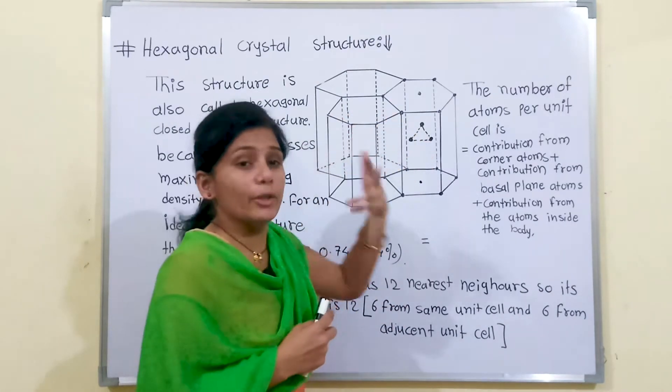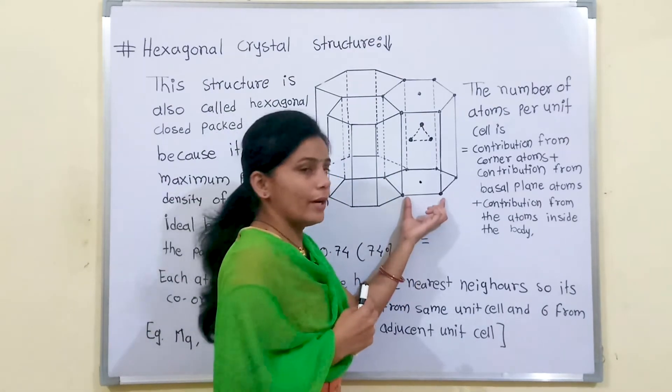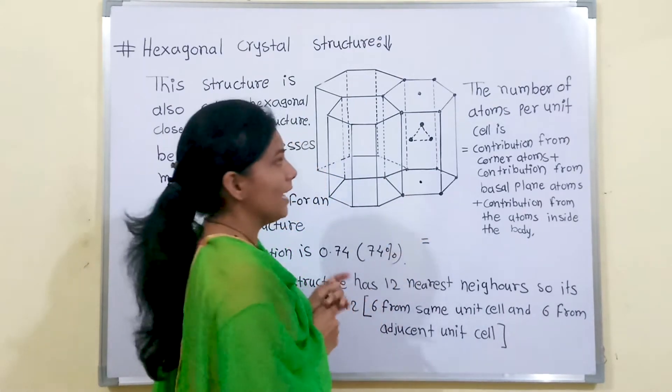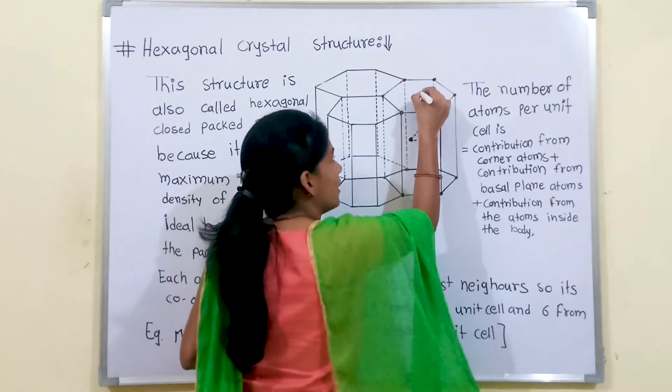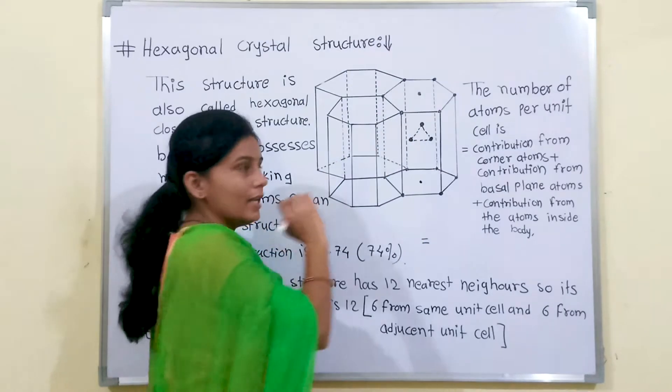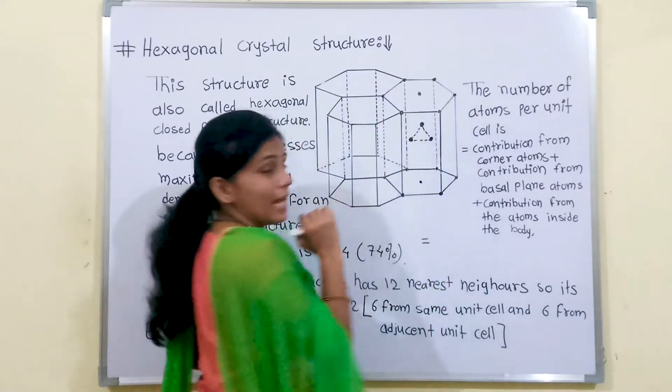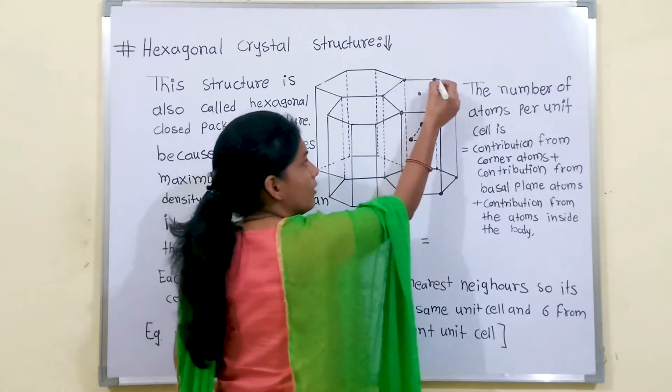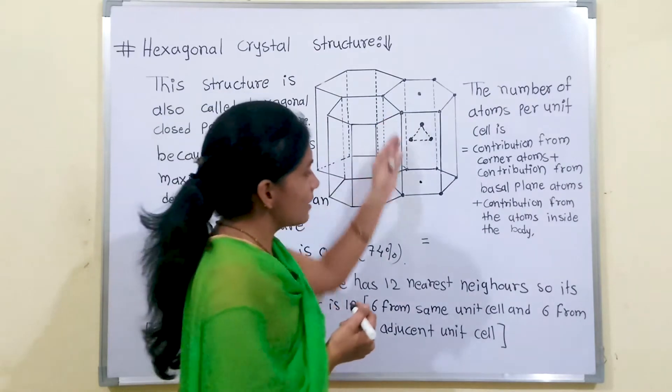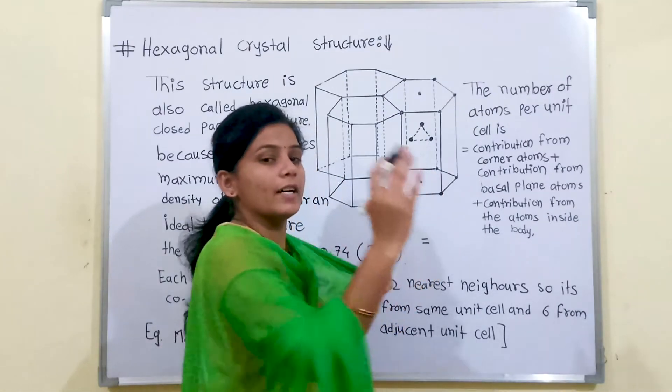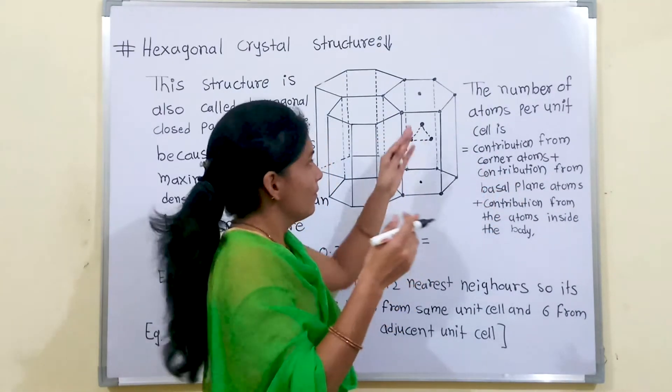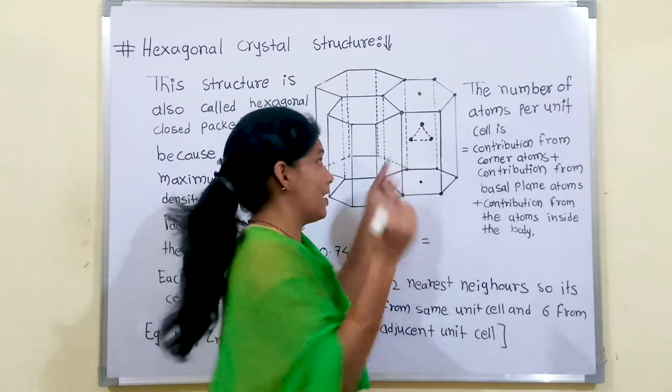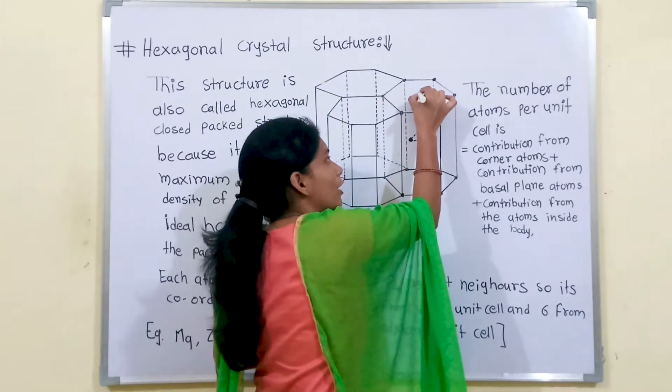We have here 3 unit cells. This is the particular 1 unit cell and if we consider 1 atom from this space and if we see the surrounding of this atom we have 6 nearest neighbors: 1, 2, 3, 4, 5 and 6. This is from same unit cell.